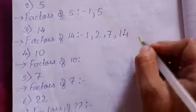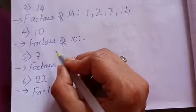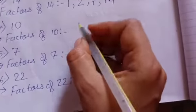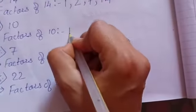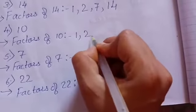Same way, 10. The factor of 10, that means in which table it is going: in table 1, in table 2, in table 5, and in table 10.